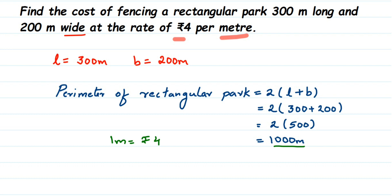It will be thousand into 4. So total cost for fencing will be equal to the charging. For one meter it is 4 rupees, right? So total cost will be equal to thousand meters multiplied by 4 rupees.